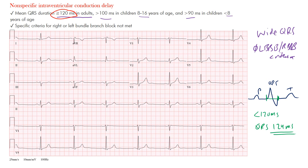This can sometimes be a benign pattern and doesn't always mean a great deal, but some studies have associated it with more arrhythmias, so it's something to be aware of. To summarize: nonspecific IVCD in adults means at least 120 milliseconds wide — or at least three small boxes in width — and the criteria for right or left bundle branch block are not met. That's the key distinction.